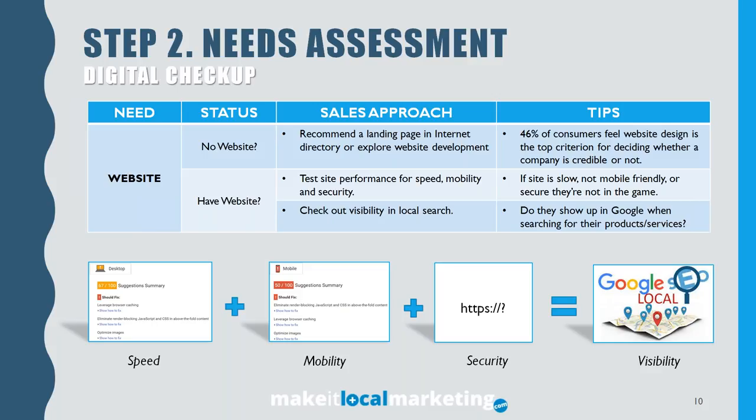We also look for their visibility in local search — doing Google searches for products and services to find out if they're on page one. If they're on page three or four, that leads into a conversation about content management and search engine optimization. Speed, mobility, security, and content really drive visibility in local search engines. Notably, 46% of consumers feel that website design is one of the top criteria for deciding whether a company is credible, so how well the website looks and performs is part of the digital checkup our reps do when preparing to reach out.